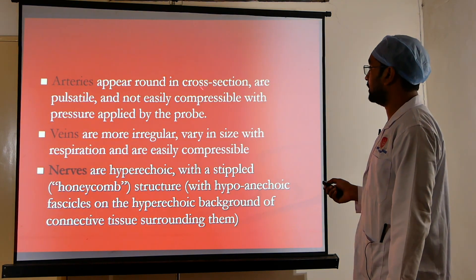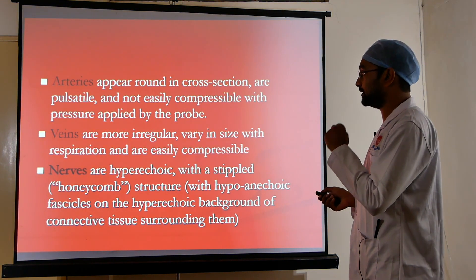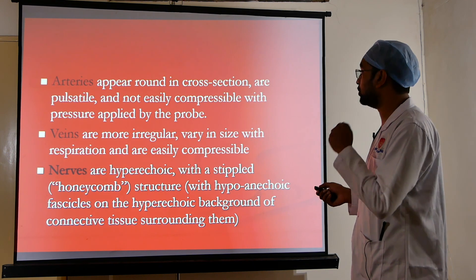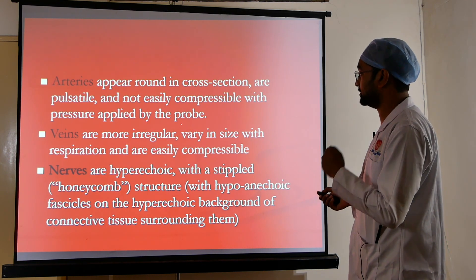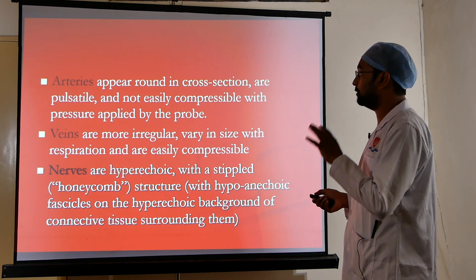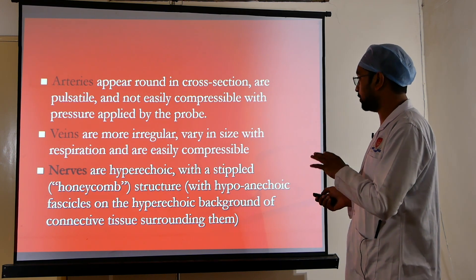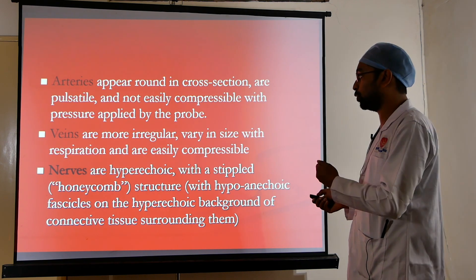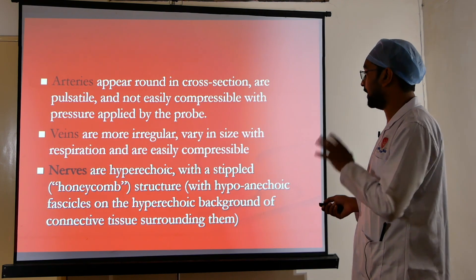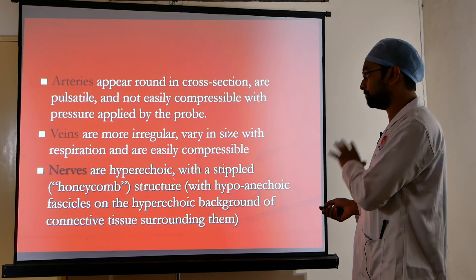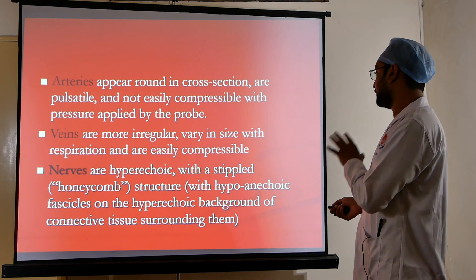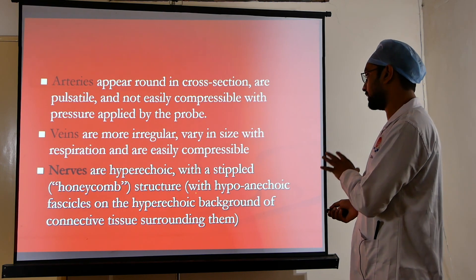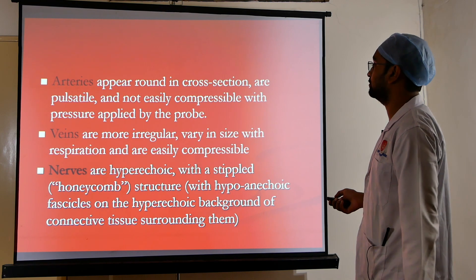On ultrasound, arteries appear round in cross section, are pulsatile, and are not easily compressed with probe pressure. Veins appear irregular, vary in size with respiration, and are easily compressible. Nerves are hyperechoic with a stippled honeycomb structure on a hyperechoic background of surrounding connective tissue.